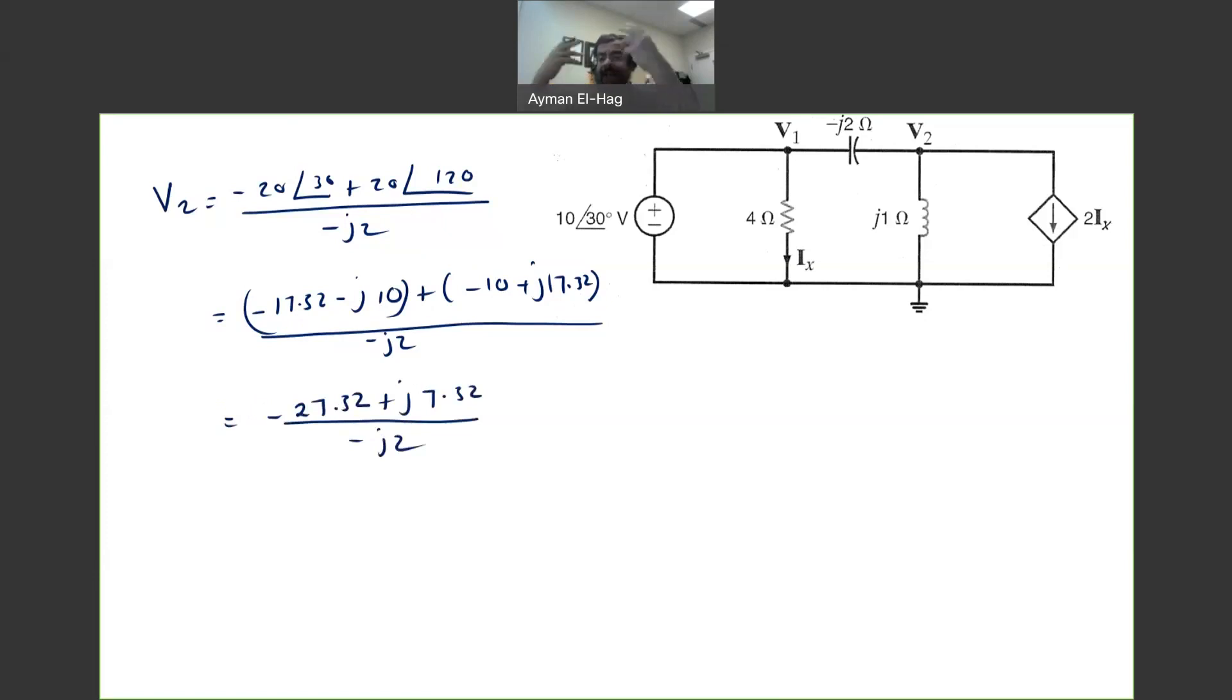Now I'm dividing a rectangular by a rectangular. It's better to convert both of them into polar. So this is equal to 28.28∠165° divided by 2∠-90°. We divide the magnitude, subtract the angles. Then we will get 14.14∠255°, or you can say it's 14.14∠-105°. Both of them are exactly the same, the same thing. So this is the voltage across the inductor.